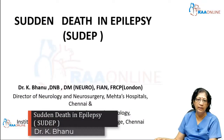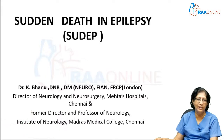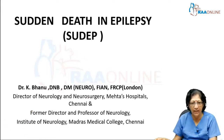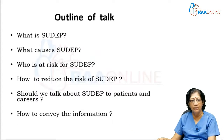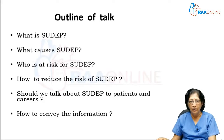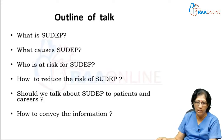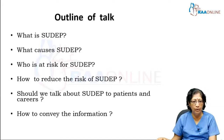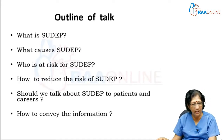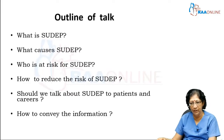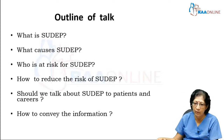Today I will be speaking on sudden death in epilepsy, otherwise known as SUDEP — S-U-D-E-P — sudden unexpected death in epilepsy person. We will see what this is, how it is happening, what causes it, who is at risk, how to reduce the risk, and whether we should talk about this with patients and carers and how to convey the information. All this will be covered in today's talk.